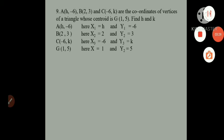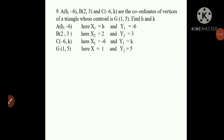We'll write the given part: A is (H, -6) so X1 = H and Y1 = -6. B is (2, 3) so X2 = 2 and Y2 = 3. C is (-6, K) so X3 = -6 and Y3 = K. The centroid G is (1, 5), so X = 1 and Y = 5.